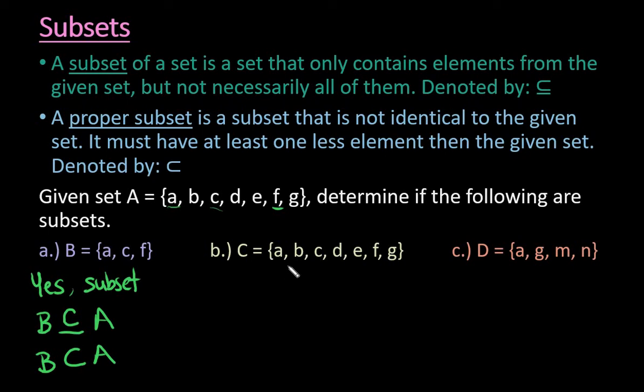For the next one we have a, b, c, d, e, f, and g. If you notice this time, it has all of the same elements, so it's equal to it. It's an equivalent set. Anytime they match up, it's an equivalent set.